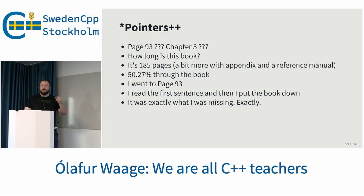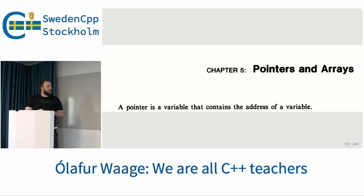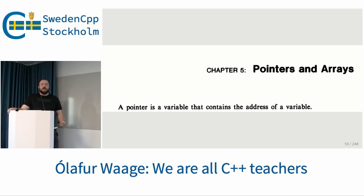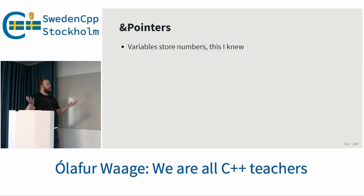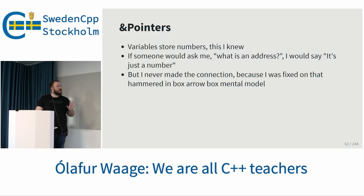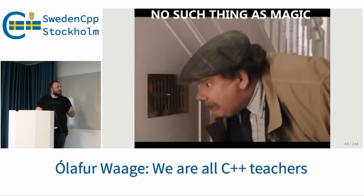Page 93, only the first line — you should go buy the book. 'A pointer is a variable that contains the address of a variable.' After 195 slides of arrows pointing at things, this was never mentioned. It's just a variable. What does it store? A number. What's the number? It's the address. This sentence is great — it contains the address of a variable. It doesn't say 'another variable', so it can't contain the address of itself. It's such a lovely sentence. Variables store numbers — I knew that. But I never made the connection, because I was fixed on that hammered-in box-and-arrow mental model. It's not magic, because there's no such thing as magic.